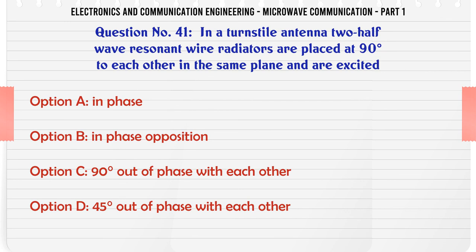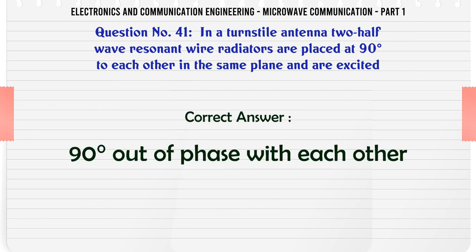In a turnstile antenna two half-wave resonant wire radiators are placed at 90 degrees to each other in the same plane and are excited: A. In phase, B. In phase opposition, C. 90 degrees out of phase with each other, D. 45 degrees out of phase with each other. The correct answer is 90 degrees out of phase with each other.